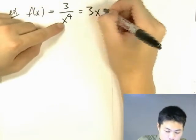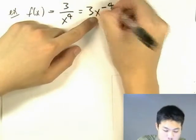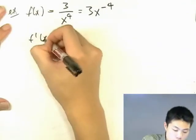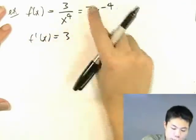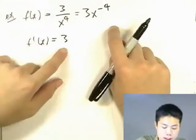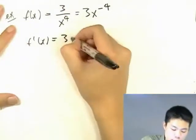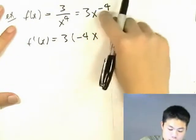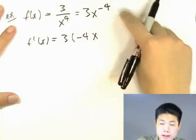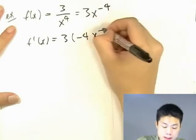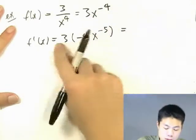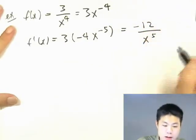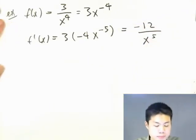Here's another example with a constant in a fraction: 3 over x to the fourth equals 3 times x to the negative 4. The derivative is 3 times negative 4 times x raised to negative 4 minus 1, which is negative 5. So 3 times 4 is 12, giving negative 12 over x to the 5th.